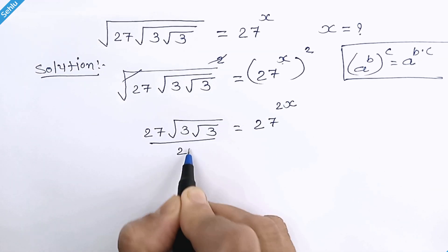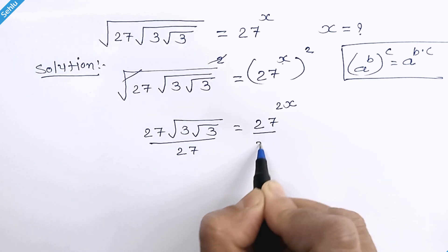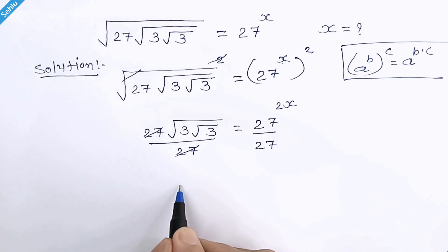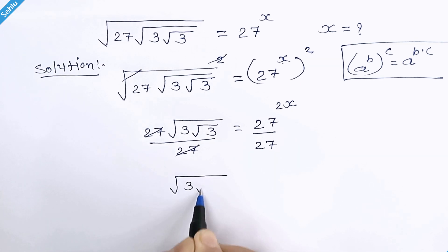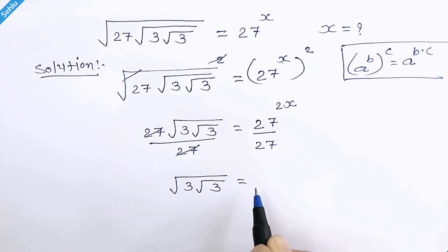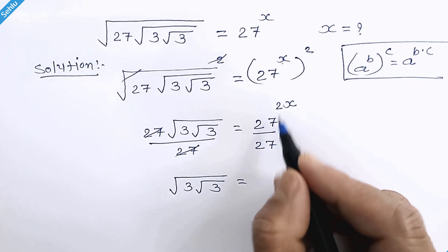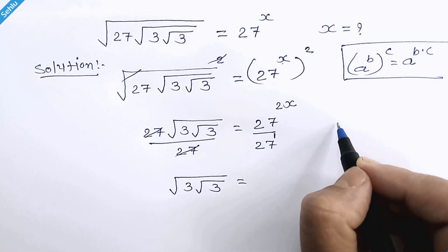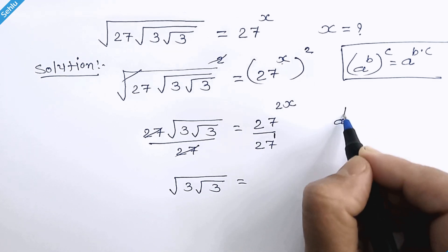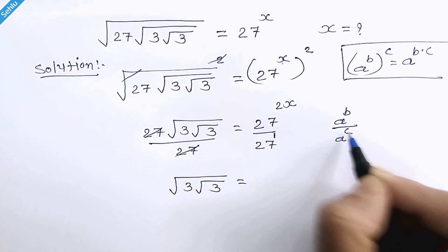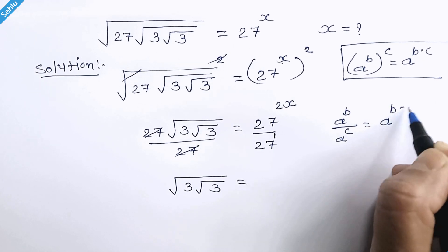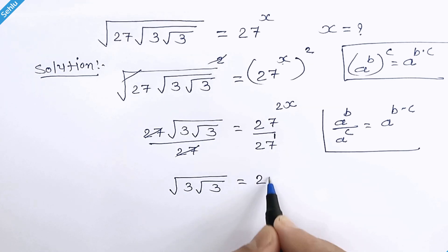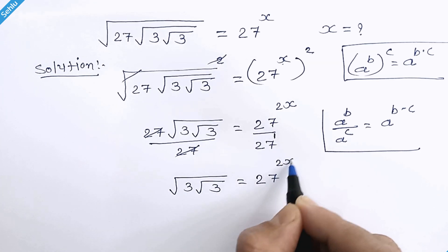Now we will divide both sides by 27, so these two will be eliminated, and we have square root 3 times square root 3 on the left. On the right hand side, 1 is the default exponent. We refer to the rule where a raised to b over a raised to c equals a raised to b minus c, so we can write it as 27 raised to 2x minus 1.